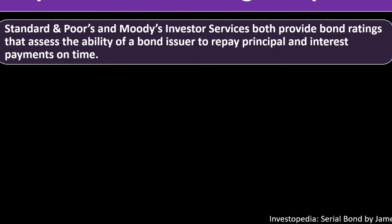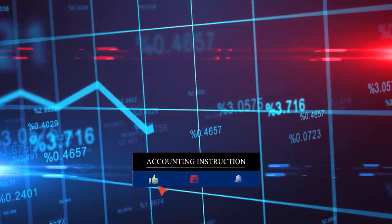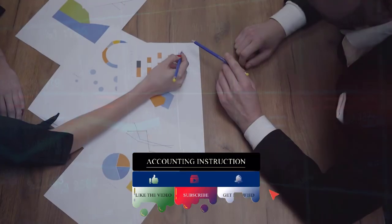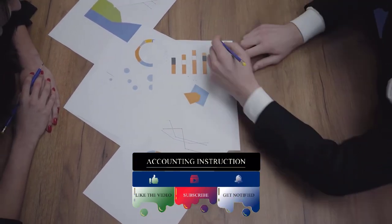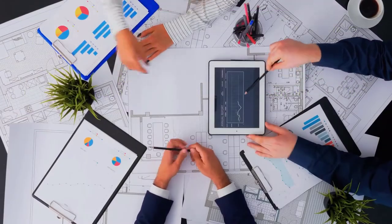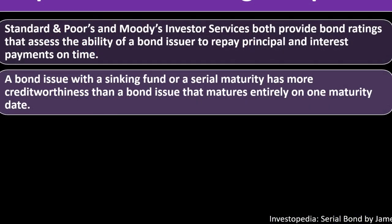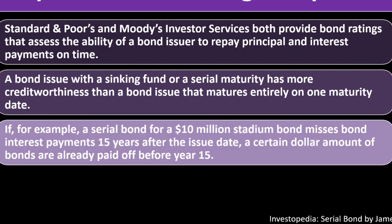Examples of bond rating companies: Standard and Poor's and Moody's Investors Service both provide bond ratings that assess the ability of a bond issuer to repay principal and interest payments on time. A bond issue with a sinking fund or a serial maturity has more creditworthiness than a bond issue that matures entirely on one maturity date. The issuer would like their rating to be as solid as possible, because that means they can issue bonds at a lower interest rate. Putting together strategies to boost bond ratings would be beneficial.